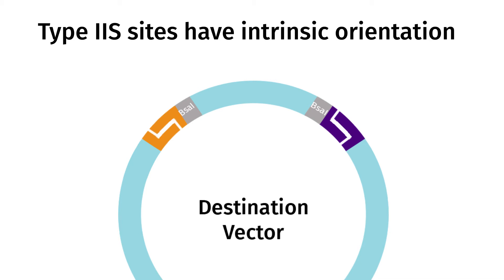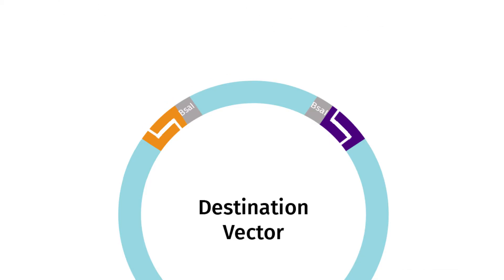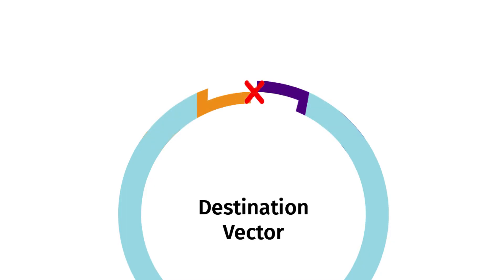In the destination vector, the sites must face away from each other or be outward facing and flank the region being excised. Therefore, after cleavage, the recognition sequences are removed from the remaining plasmid backbone, making the backbone resistant to further digestion by the restriction enzyme. In addition, the resulting overhangs are not compatible with each other, so the plasmid cannot recircularize.